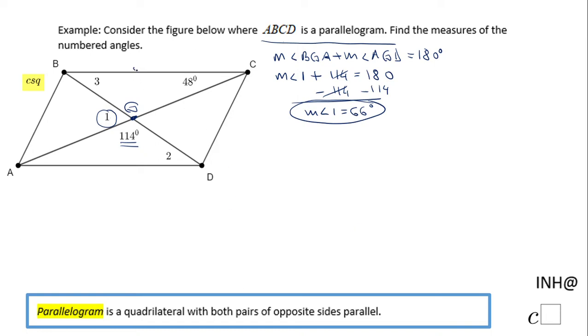Now I know that BC and AD are parallel segments or lines. That means angle 3 and angle 2 are congruent. So if I find one of these two, I have the other one.